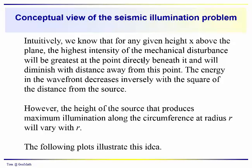For the seismic illumination problem, we assume that the point of highest intensity obviously is just the point directly beneath the location of the source. And that's true. We know that the energy in that wavefront, the spherical divergence of that energy, is going to decrease inversely as the square of the distance from the source. It's basically an inverse square law. However, the height of the source that produces maximum illumination along the circumference at radius r will vary with r. And so we're going to take a look at that first graphically.